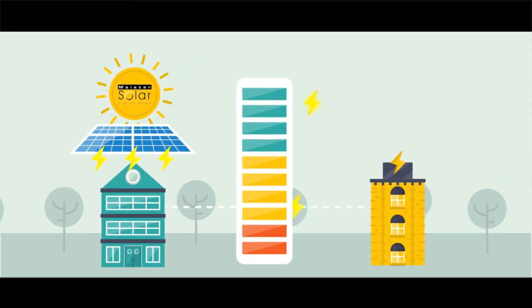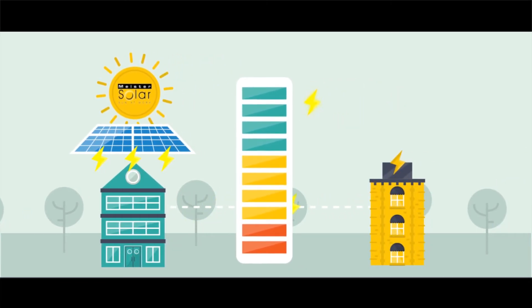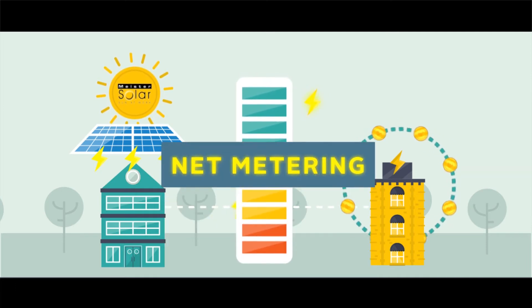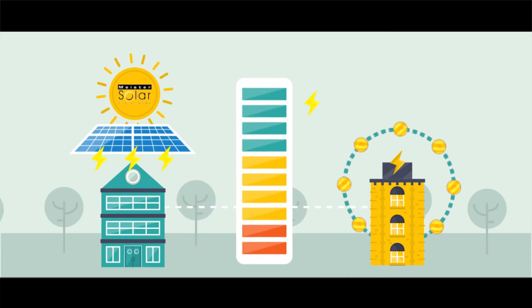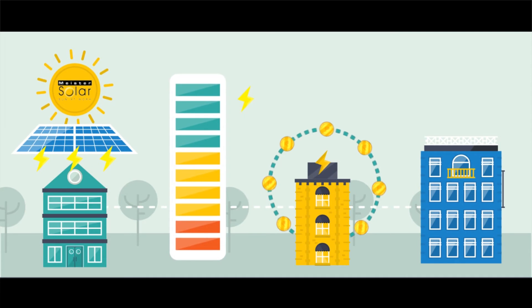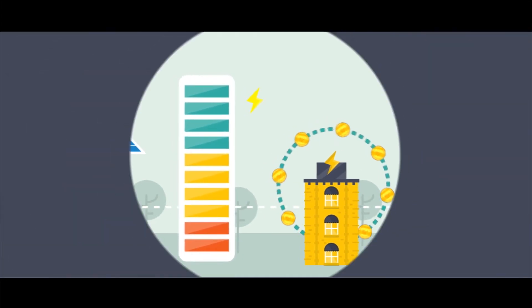The excess energy will then be sent directly back to your distribution utility company, where they are required to buy back your excess electricity. This concept is called Net Metering. The distribution utility company buys your excess solar energy and sells the energy to other homes and businesses in your neighborhood.